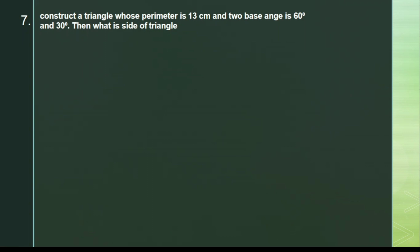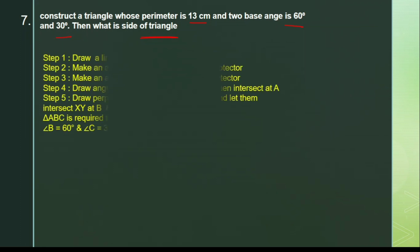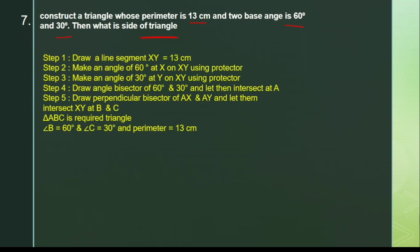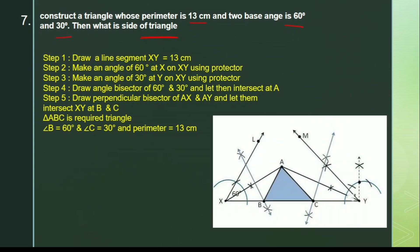Next question: construct a triangle whose perimeter is 13 cm and whose two base angles are 60° and 30°. You have to find the sides of the triangle. The process is: first take a base of 13 cm, then construct the two angles of 60° and 30°, then bisect the angles. These are all the steps — try to understand them carefully.